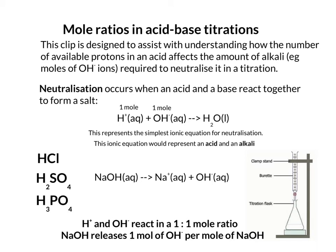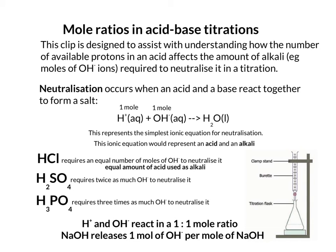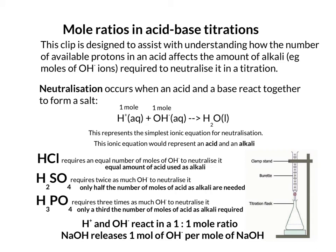NaOH releases one mole of OH⁻ per mole of NaOH, as seen from its dissociation equation. Applying this to our acids: HCl, being monobasic, requires an equal number of moles of OH⁻ to neutralise it — so equal amounts of acid and alkali are used. Being dibasic, sulfuric acid requires twice as much OH⁻, meaning only half the number of moles of H₂SO₄ are needed compared to the alkali. Phosphoric acid, being tribasic, requires three times as much OH⁻, so only a third the number of moles of H₃PO₄ as alkali are required.